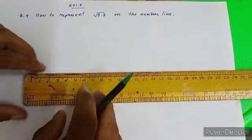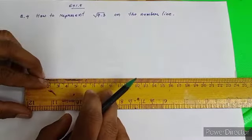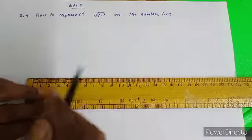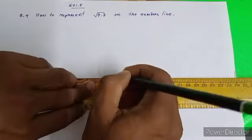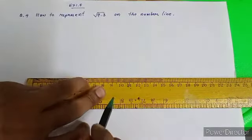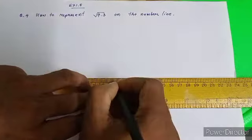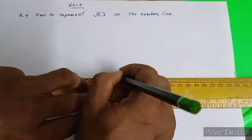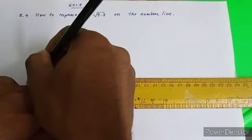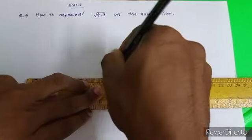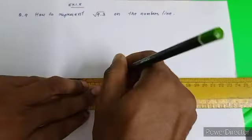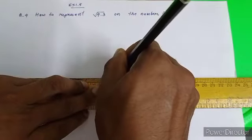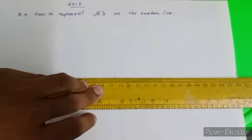Now from here, if I take it, this is 9 and 3 will be counting the smaller lines 1, 2, 3. From here to till here, this is 9.3.